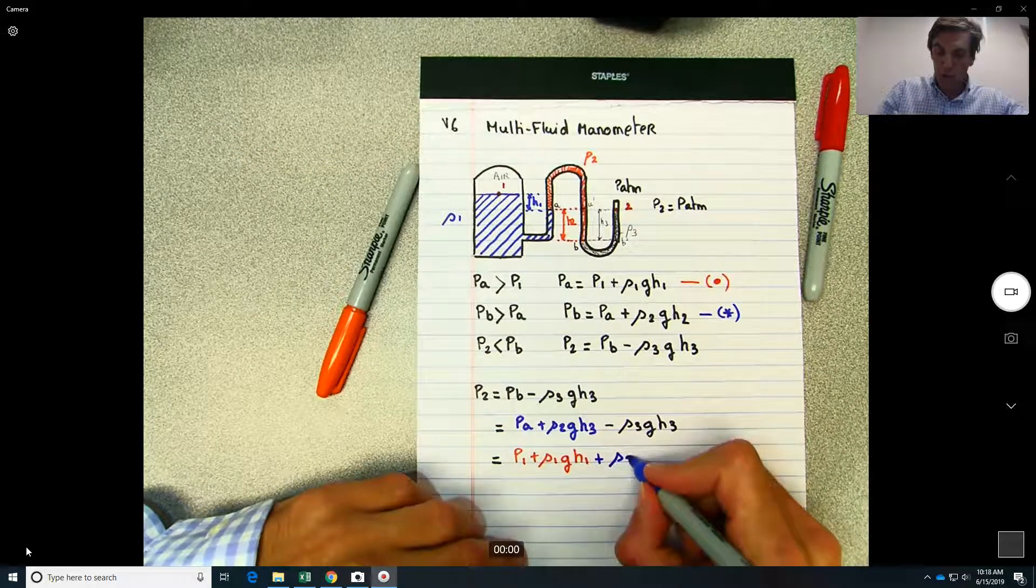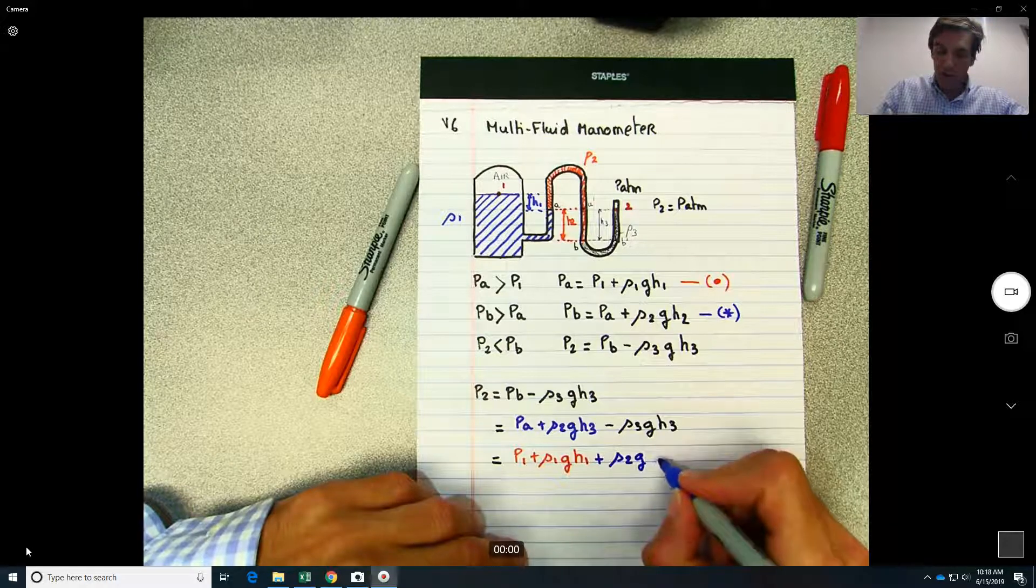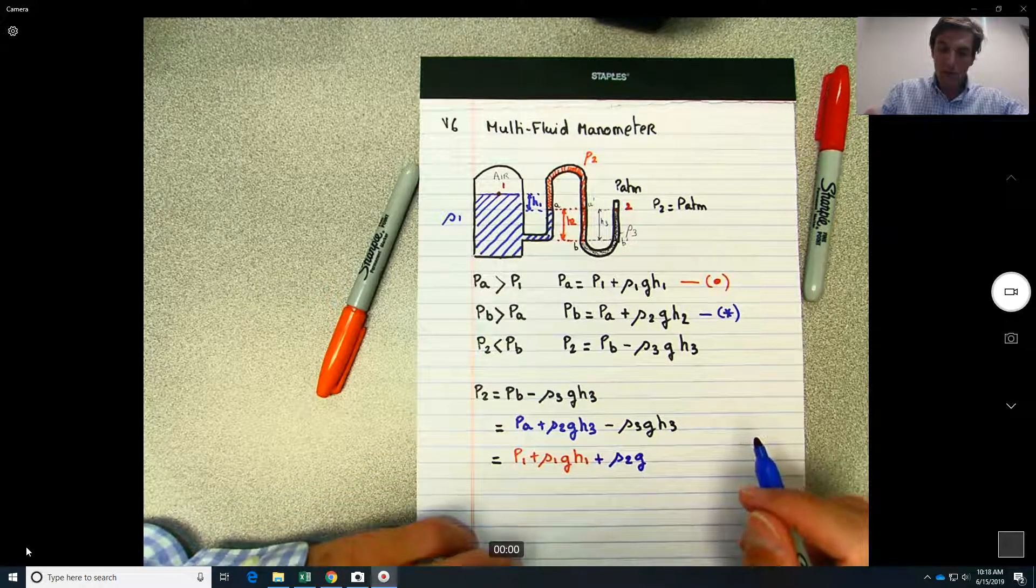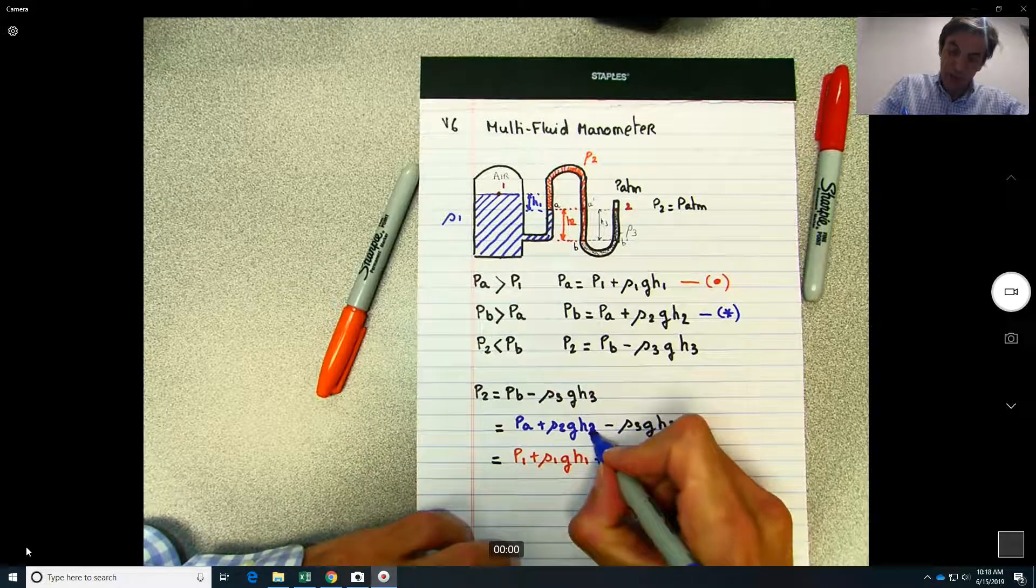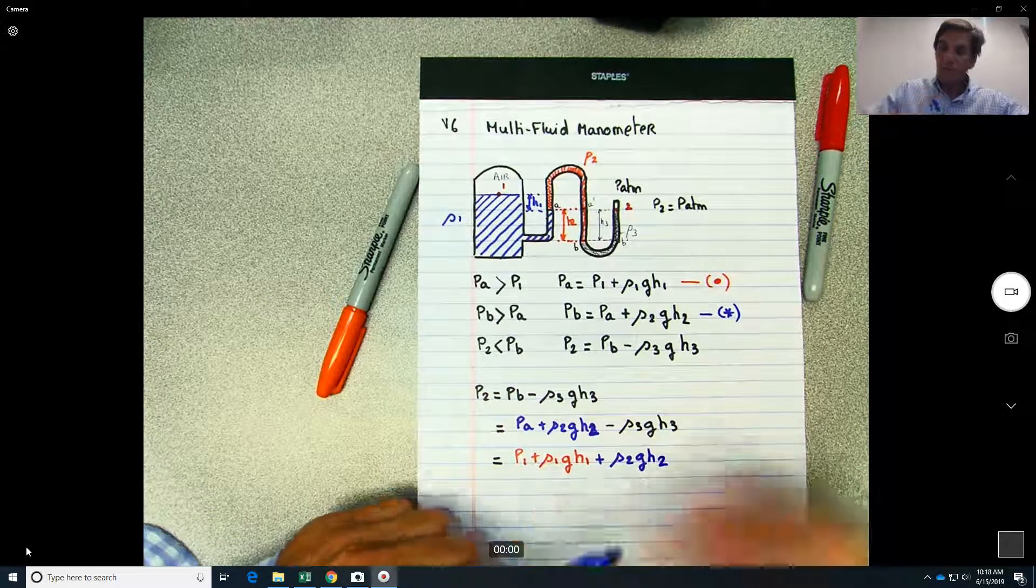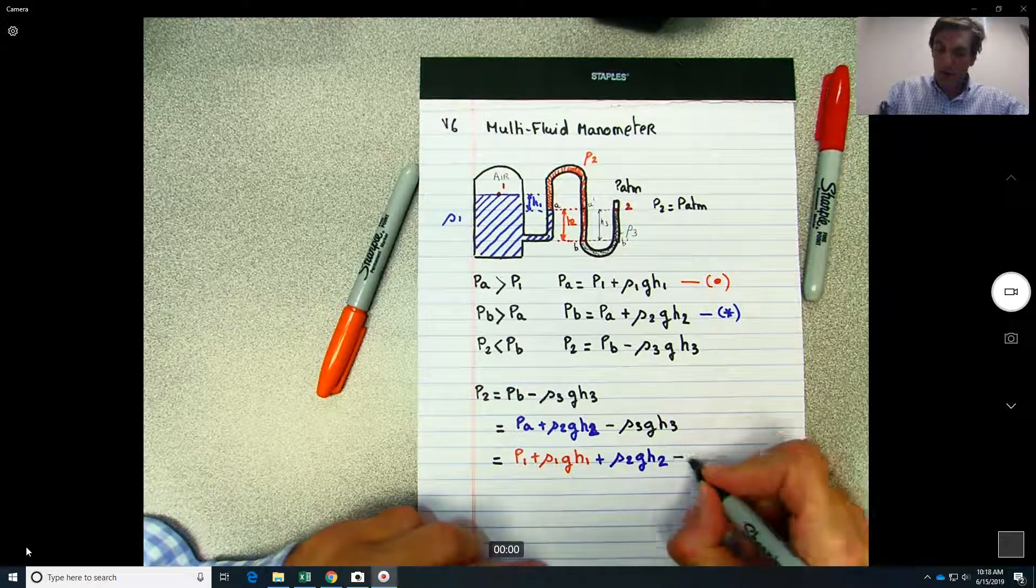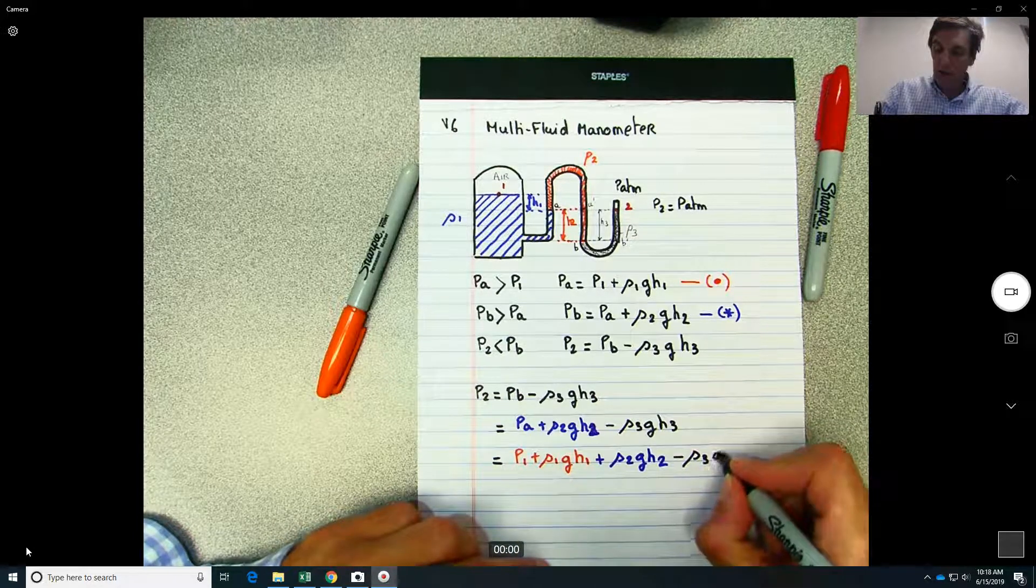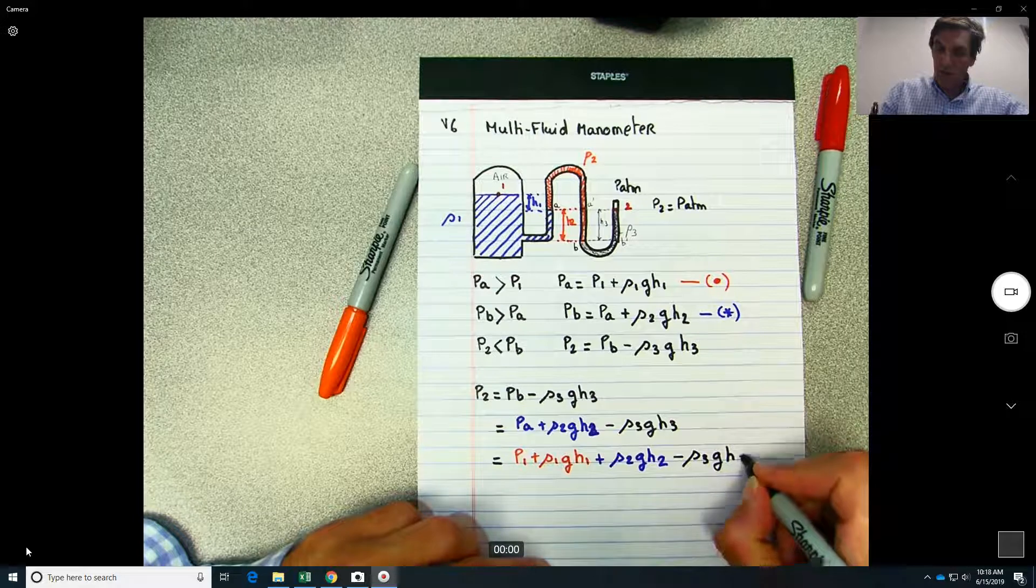Plus, now we keep going, rho 2 G h2. Oh here I did a mistake, this should be a 2, sorry. G h2 minus rho 3 G h3.